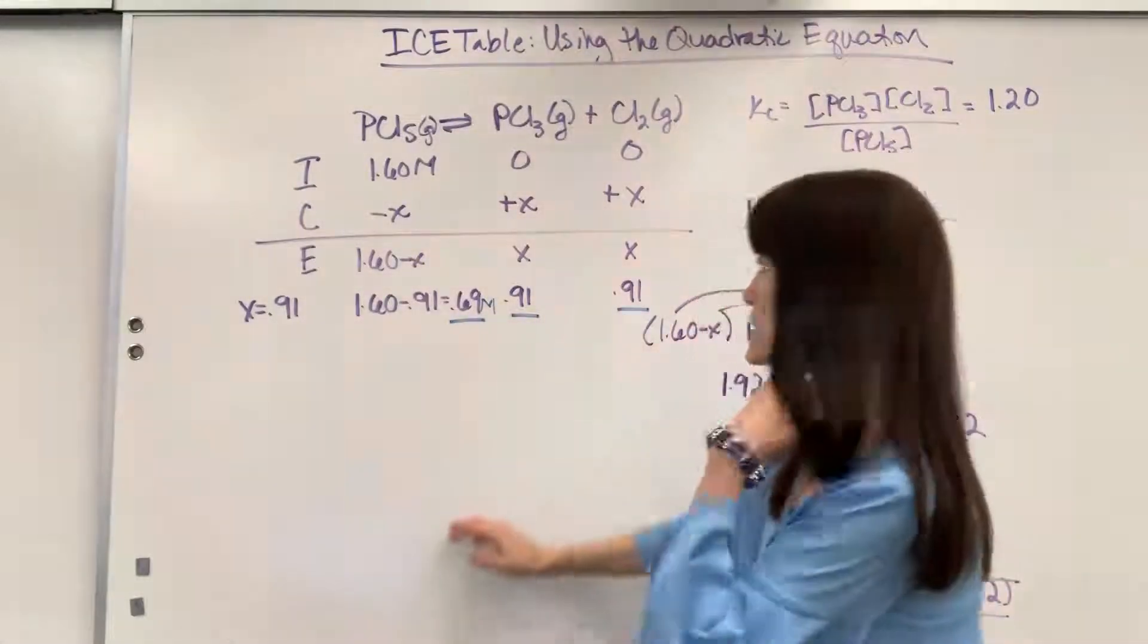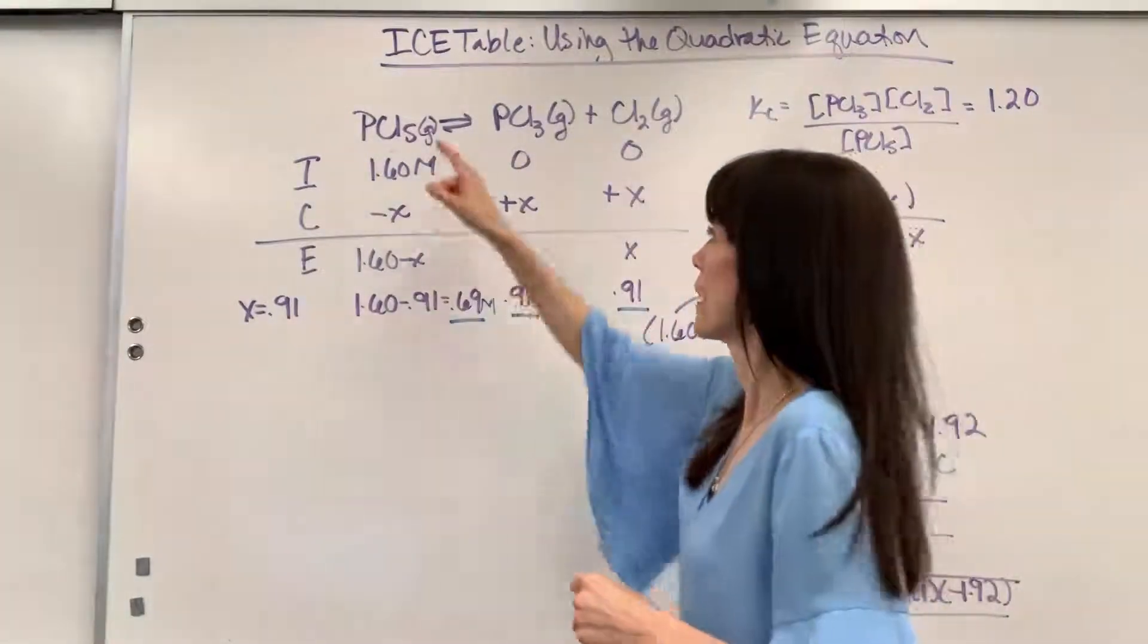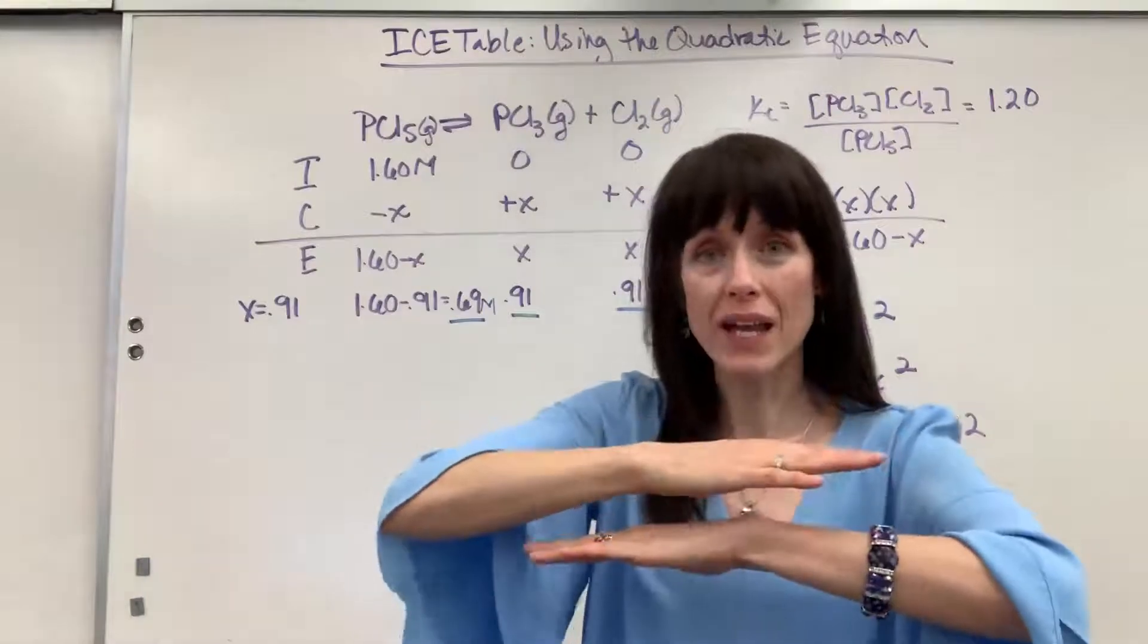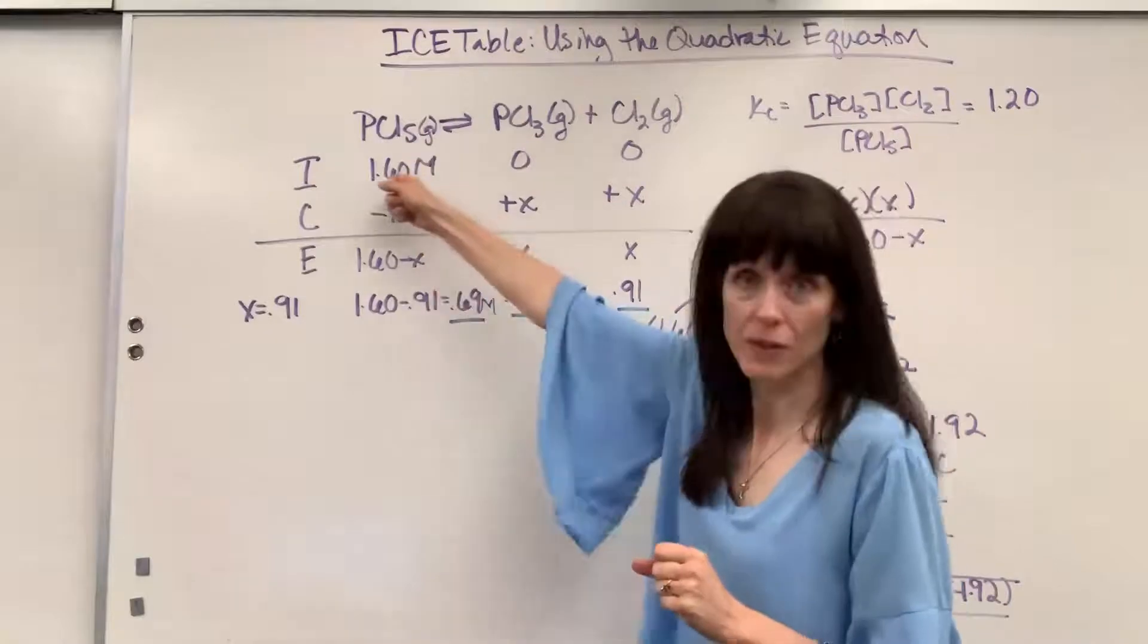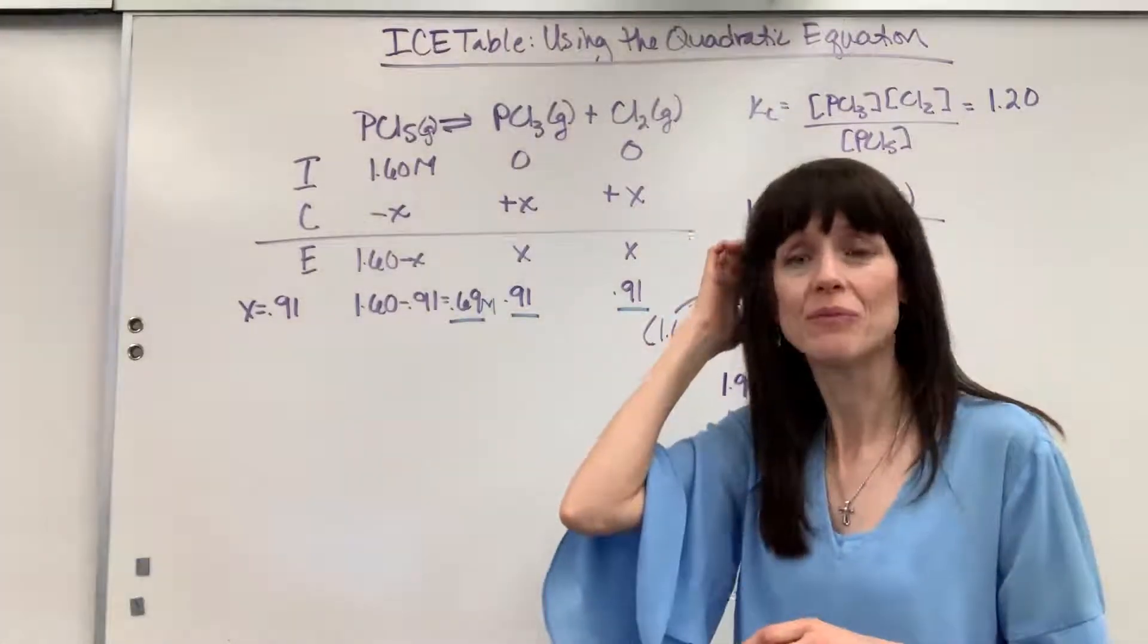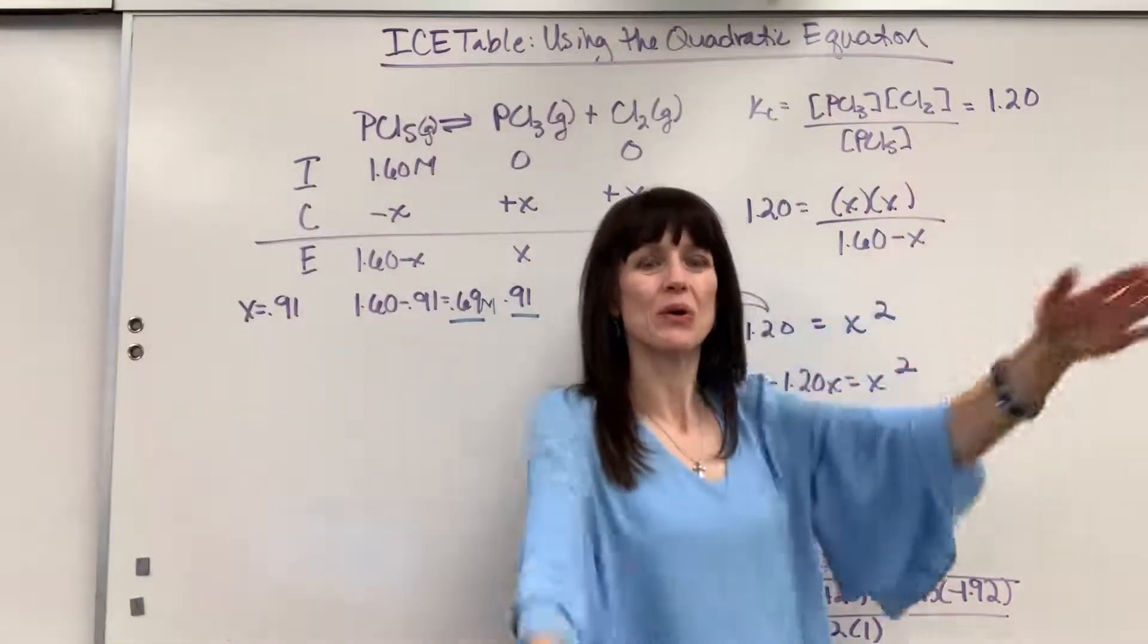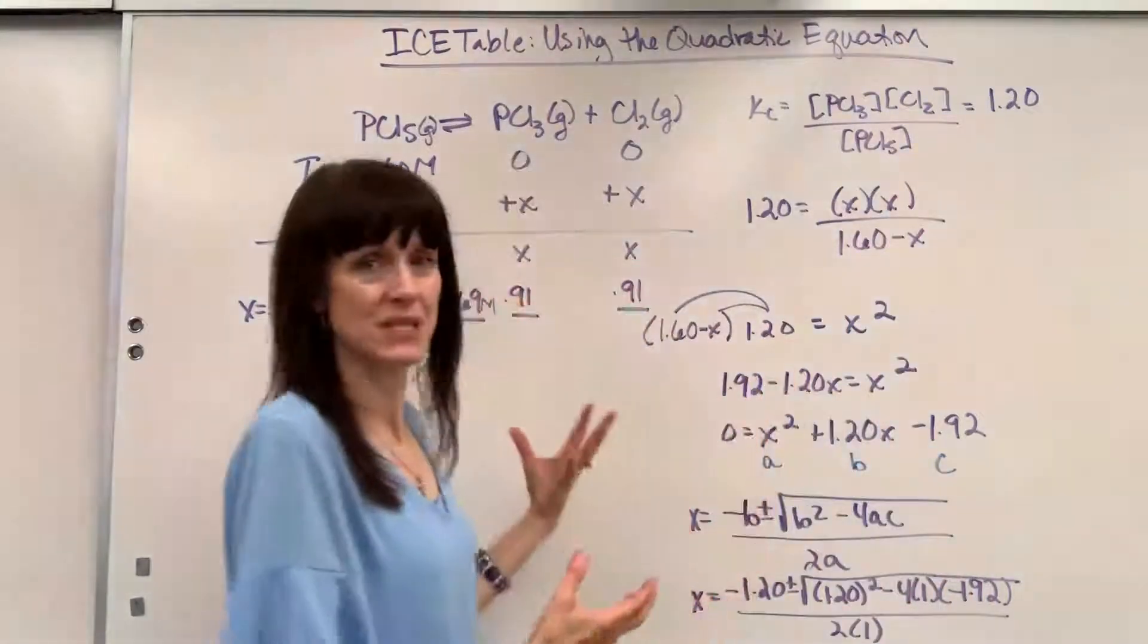So what does that tell us? This tells us when PCl5 decomposes and we hit that beautiful equal rate, the rate at which reactants change to products is the same rate that products reverse and change back to reactants. And when we have those equal rates, the concentrations are constant, and those amounts are 0.69 for the PCl5 and 0.91 for the PCl3 and the Cl2. Now notice, I'm going to have more of the products than the reactants because this K value is greater than 1. When we're at equilibrium, there are more products than there are reactants in this particular reaction.